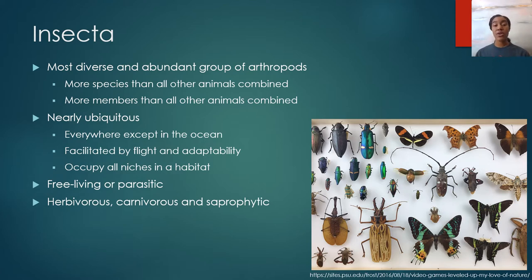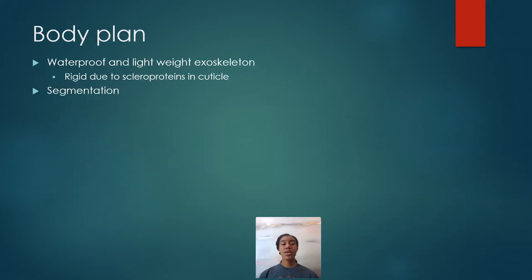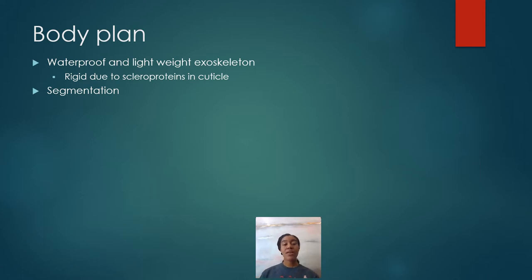Insects can be free-living or parasitic, and they can be herbivorous, carnivorous, or saprophytic, depending on the species and conditions. Like all other arthropods, insects have a cuticle, and their cuticle is reinforced with proteins called scleroproteins, which provide rigidity and strength to the exoskeleton while also allowing it to be lightweight. This is important for mobility — if their cuticle is too heavy, they can't move quickly or fly.